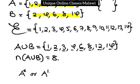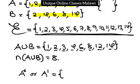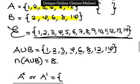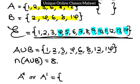Now, A complement — A bar — is a list of elements which are not found in that particular set. So we consider the universal set. A complement is the set of elements in the universal set that are not in A. So A complement is: 4, 5, 7, 9, 10, 11, 13, 14. That's A complement — the set of elements not found in set A.